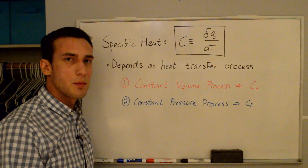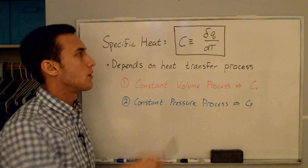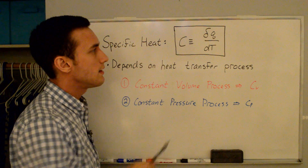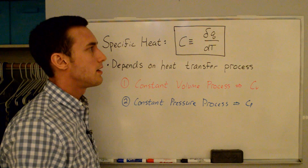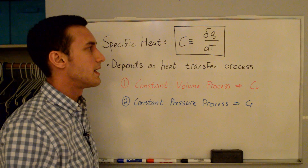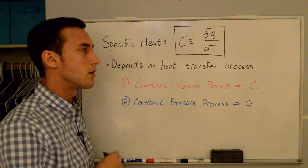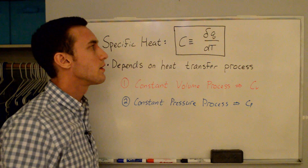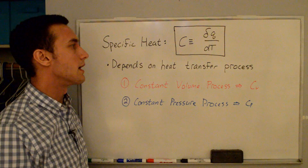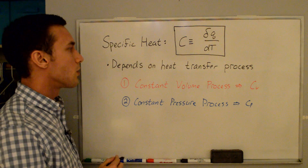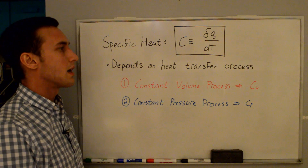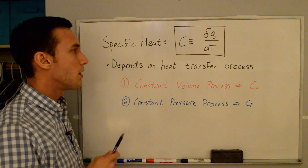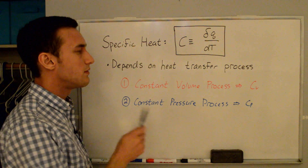Hey everyone, in this video we're going to be talking about specific heats. Up here I have the definition of the specific heat. C is defined as dq over dT, where the d in the denominator signifies it's an exact differential, but the dell up here signifies that it does depend on the heat transfer process. We can specify a couple of different useful specific heats — two that you'll see all the time are cv and cp.